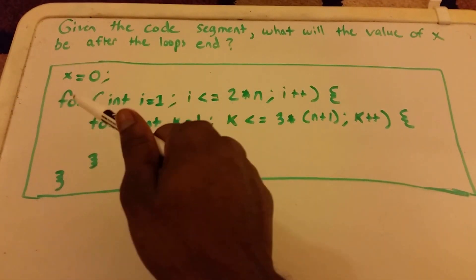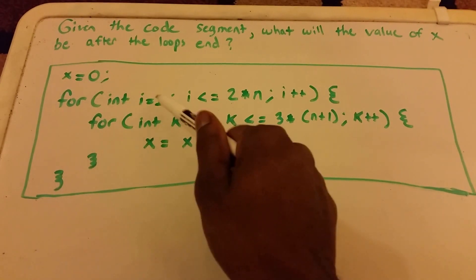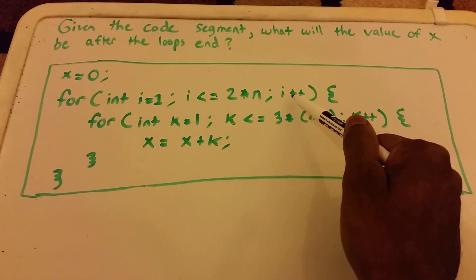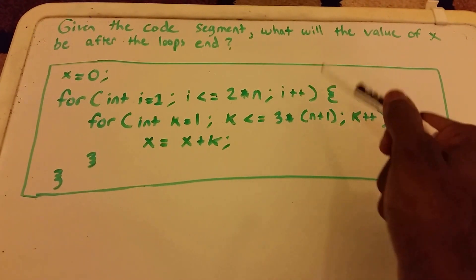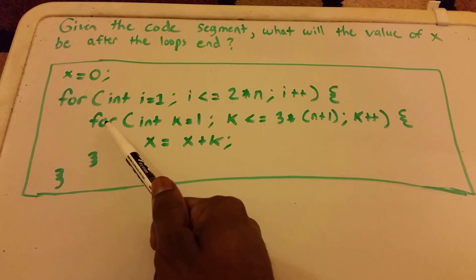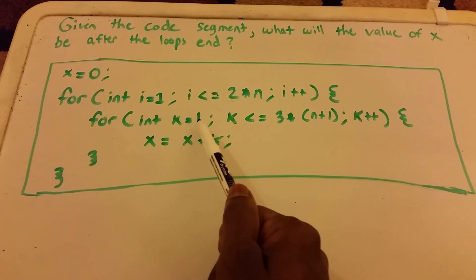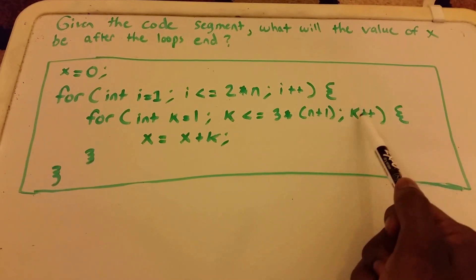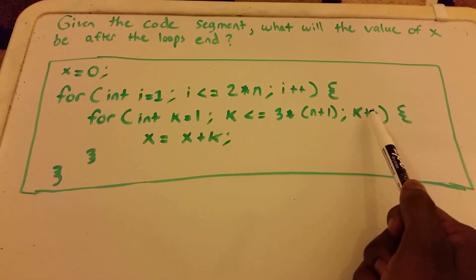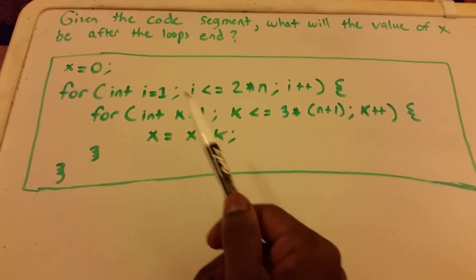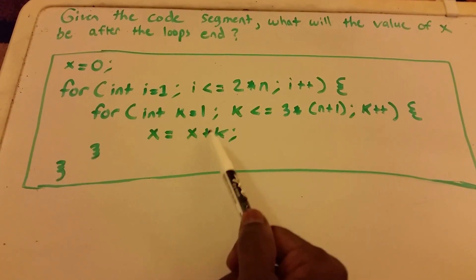It says x equals zero, and then we have a for loop. It says for integer i equals one, i is less than or equal to two times n, and then i increments by one each time. Within this loop is another loop, the inner loop, and it goes from integer k equals one to k less than or equal to three times n plus one, and k increments by one each time. And then here we actually have our x value that we're trying to solve for, and it has x equals x plus k.